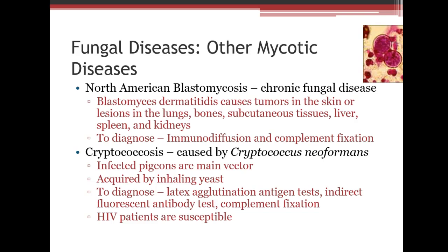North American blastomycosis is seen more commonly in northern states like Minnesota, North Dakota, Wisconsin, and northern Michigan. It looks like a snowman under the microscope. If not caught early, it can cause death. It produces tumors in the skin, lesions in the lungs, bones, subcutaneous tissue, liver, spleen, and kidneys. Diagnosis uses wet prep, immunodiffusion, and complement fixation.